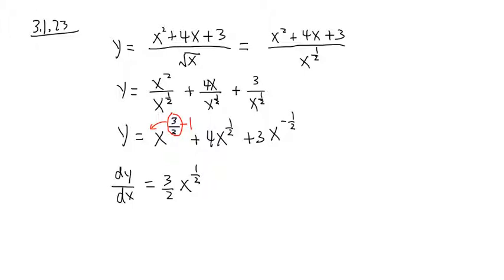Alright, and let's work out the second part. I have positive 4, x to the 1 half, circle the exponents, bring to the front, and then minus 1 to the exponents. Positive 4 times positive 1 half, I get positive 2, and I have x, 1 half minus 1, it's going to be negative 1 half.